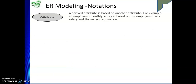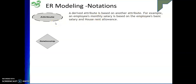Next, the derived attribute is an oval shape but in a dotted form. A derived attribute is one which can be derived or calculated from other attributes. For example, years of experience can be calculated from the date of joining and the current date. Similarly, an employee's monthly salary can be derived from the basic salary and the house allowance — so based on those two stored values we can calculate the monthly salary.